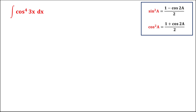For this problem, we need to find the integral of cosine to the power 4 of 3x. First, we rewrite this as the integral of cosine squared times cosine squared. Then we use the identity for cosine squared, applied to the given angle. Since the given angle is 3x, cosine squared equals 1 plus cosine of 2 times the given angle, all over 2.